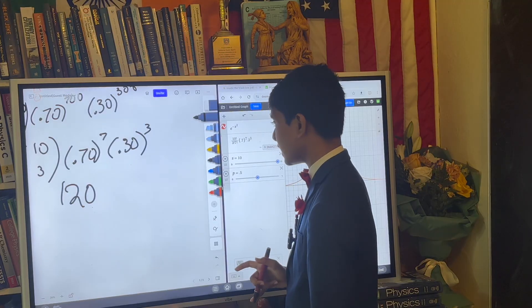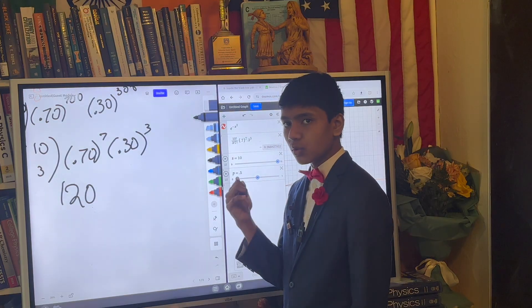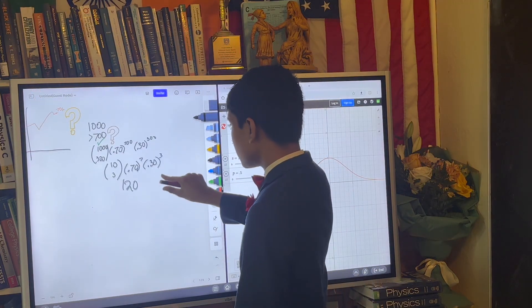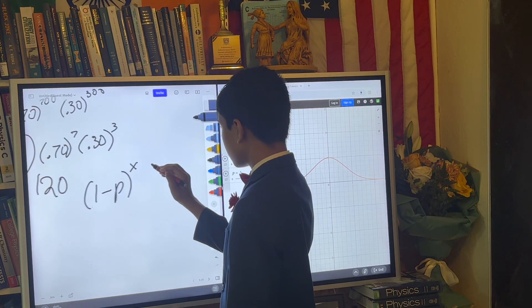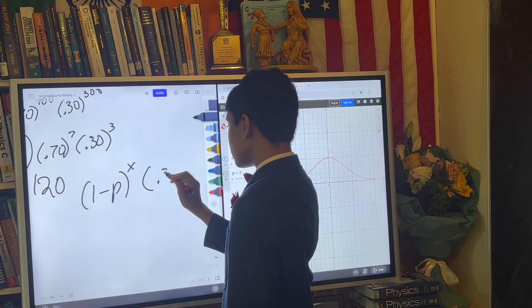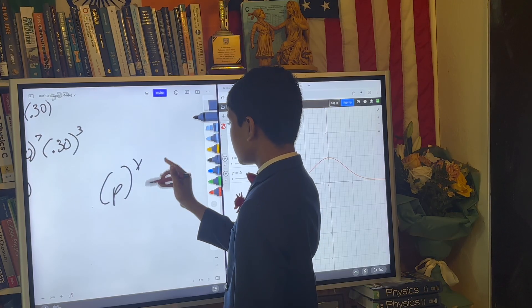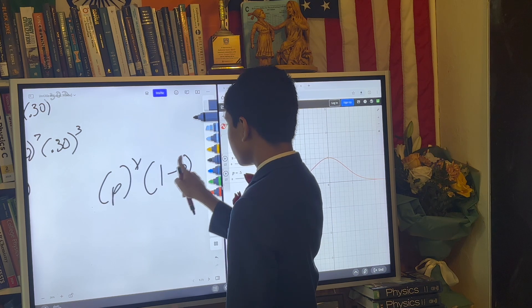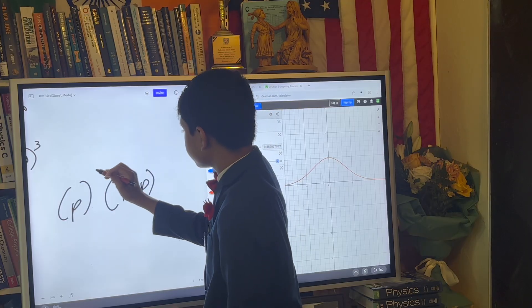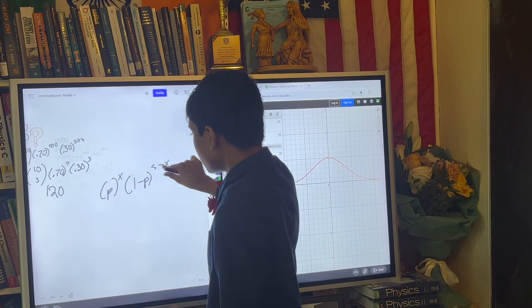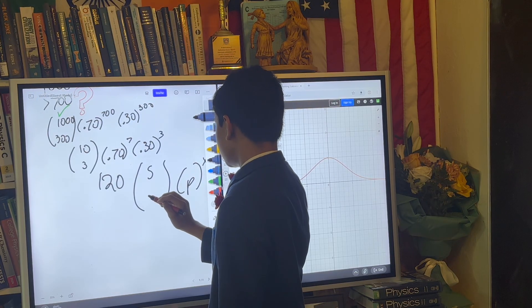So what happens now when we try to graph the distribution with these? Well, hiding this for a second, you're about to see some crazy resemblance. S equals 10, P equals 0.5, or we can change it to whatever we want. But it's going to be P to the X times 1 minus P to the S minus X times S choose X.